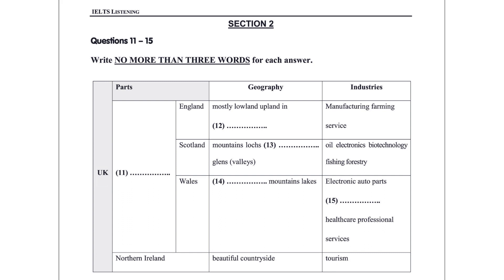Wales is home to 3 million people, and its geography is characterised by coastline, mountains, and lakes. Cardiff is the capital and largest city. Key industries include electronics, auto components, food processing, healthcare, and professional services. More Japanese companies have set up shop in Wales than anywhere else in Europe. About 1.6 million people live in Northern Ireland, the capital of which is Belfast, the largest city. Residents enjoy beautiful countryside, and many new hotels are springing up to cater for increasing numbers of tourists and business travellers.